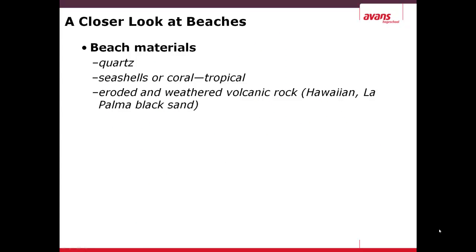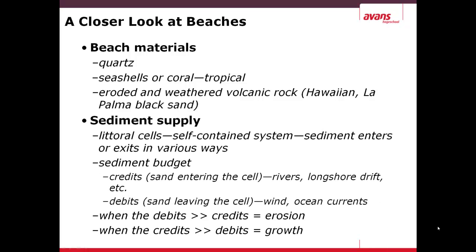Beaches are quite often made of quartz, sea shells or coral in tropical areas, and eroded and weathered volcanic rock — most notably in Hawaii and on the island of La Palma in the Canary Islands, off the western coast of Africa. Regarding sediment supply, these are called littoral cells — a self-contained system where sand will exit or enter. If it enters it's called a credit, such as from rivers or through longshore drift. A debit is the taking away of sand, which can happen through storms, wind, or ocean currents. When the debits are greater than the credits, you have erosion; when the credits are greater, you have beach growth.